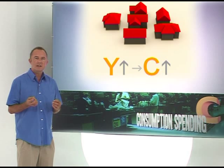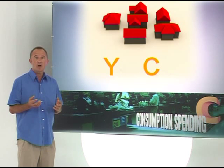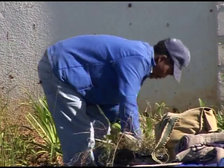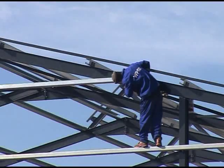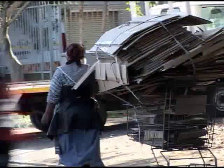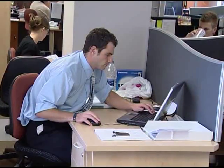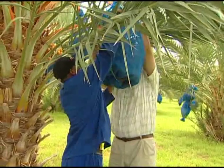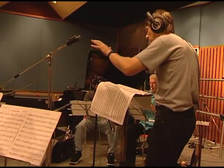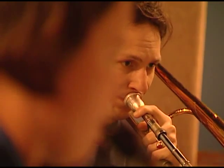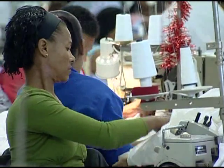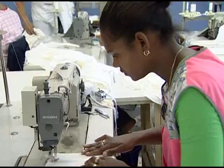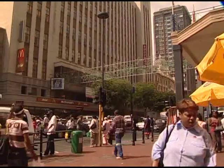Household income is denoted by the letter Y. Any rise in household income will cause an increase in their consumption spending C. Likewise, a decrease in income will reduce consumption spending. For most of us, we work — we trade our skills and effort to firms and in return we get paid. In economic language, we offer whatever factors of production we each have to firms in return for an income in the form of wages and salaries.